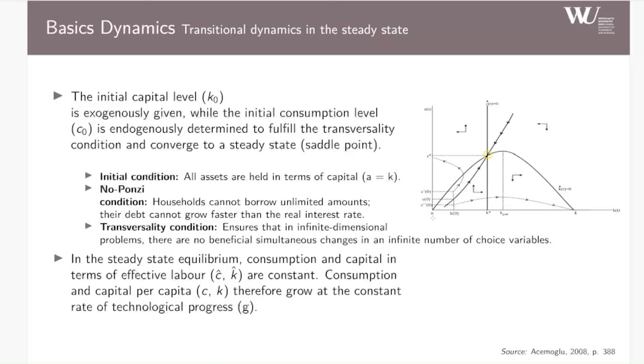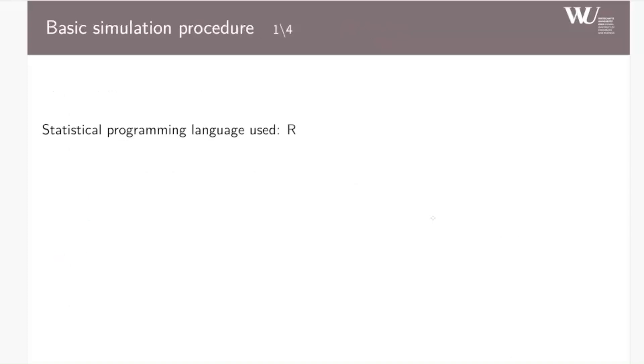In the end, in the steady state equilibrium, consumption and capital in terms of effective labor are constant. Consumption and capital per capita, however, grow at the constant rate of technological progress.